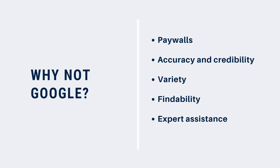First is paywalls. Many academic resources are secured behind paywalls. You may have already encountered this — looking for an article only to get stuck on a page asking you to pay to view it. The Parrott Center subscribes to hundreds of databases giving you access to an incredible amount of information, and you don't have to worry about paying. If we don't have access to something you need, we can often get it from another college using a free service called Interlibrary Loan.